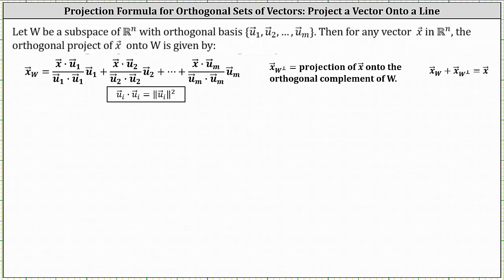Let W be a subspace of R^n with an orthogonal basis containing the vectors u_1 through u_m, which means the vectors u_1 through u_m are all perpendicular to each other. Then for any vector x in R^n, the orthogonal projection of vector x onto W is given by the formula vector x sub W.